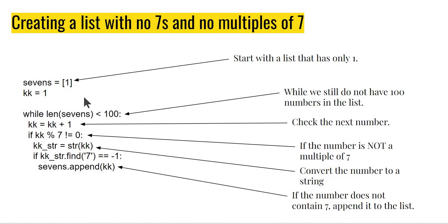We are looking at enhancing the NumberHunt project from the YByte Python Curriculum, available at www.ybyte.in. NumberHunt is an interesting number game where the computer picks a number and we have to guess it, or we pick a number and the computer has to guess. We've seen previously that we can make this game quite interesting by picking numbers from special lists, for example a list of perfect squares or a list of prime numbers.